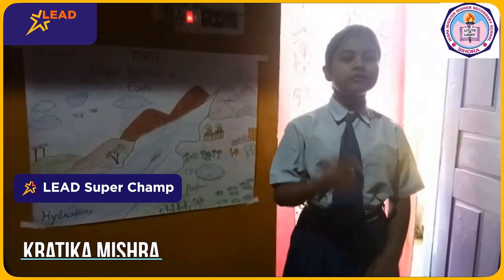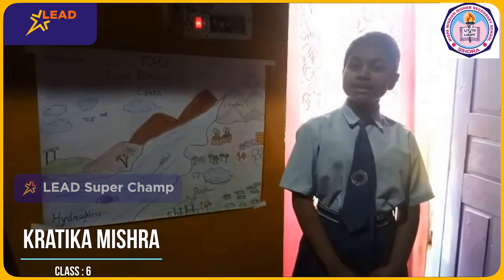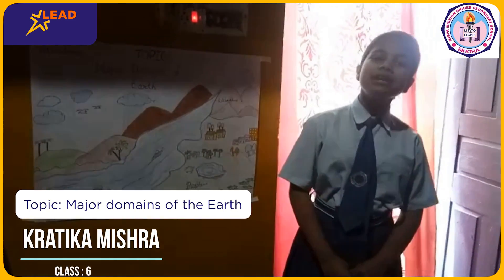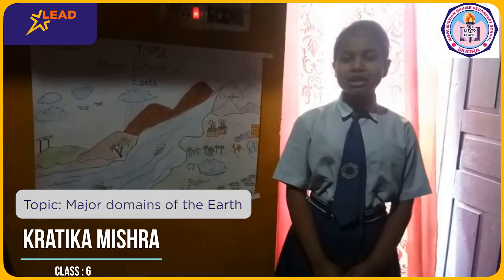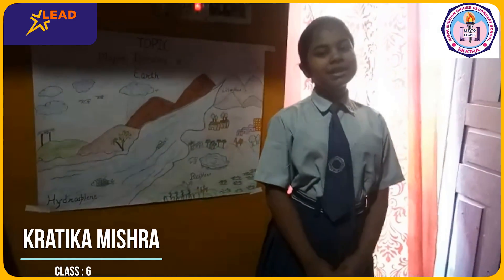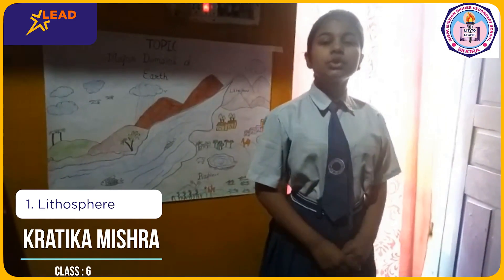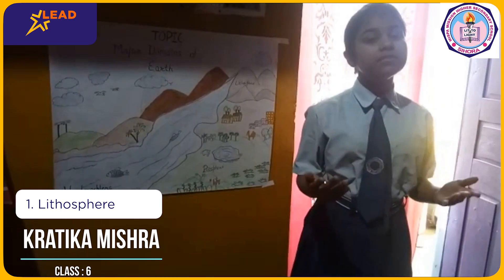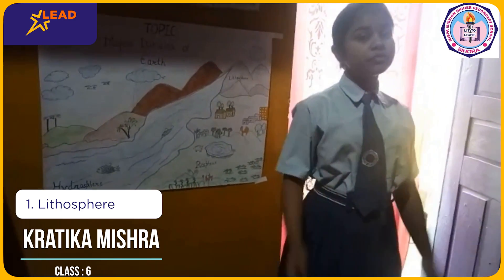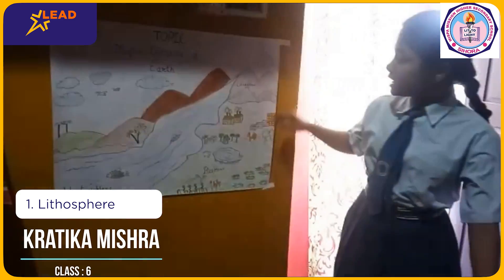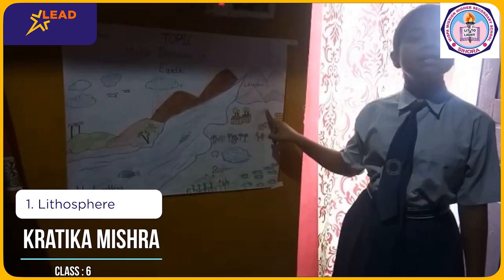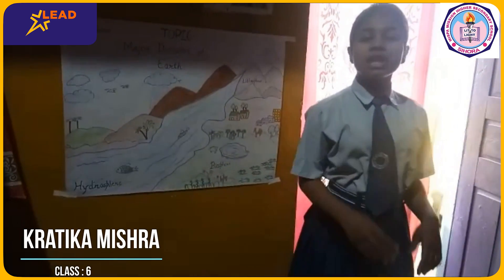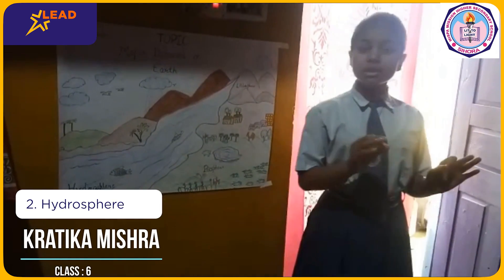There are four major domains of the earth: lithosphere, hydrosphere, atmosphere, and biosphere. The solid portion of the earth's surface in which we live is called the lithosphere. As you can see, this layer — all land area — is called the lithosphere.